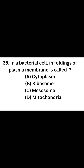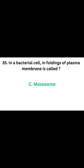Question number 35. In bacterial cell, infoldings of plasma membrane is called. Option A: Cytoplasm. Option B: Ribosome. Option C: Mesosome. Option D: Mitochondria. The correct answer is Option C, Mesosome. Infoldings of plasma membrane is called Mesosome.